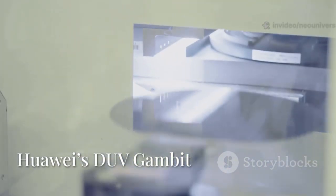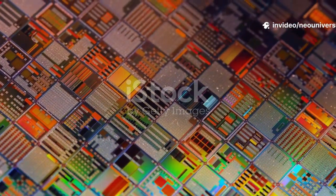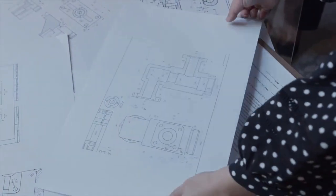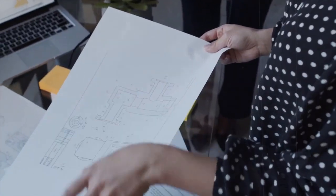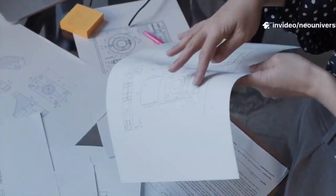Blocked from EUV, Huawei doubled down on DUV, their strategy multi-patterning, using the DUV marker multiple times to draw finer lines. A new patent revealed their boldest move yet, self-aligned quadruple patterning, SAQP, a technique that could in theory push DUV to 2-nanometer-class chips.